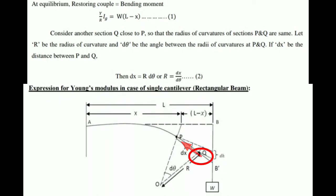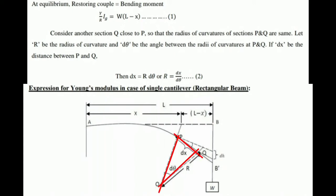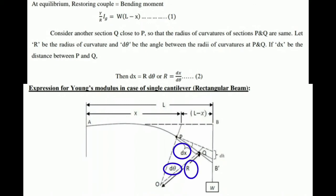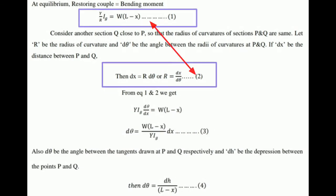In the same cantilever, consider another section Q close to P, so that the radius of curvature at sections P and Q are the same. Let R be the radius of curvature and dθ be the angle between the radii of curvature at P and Q. If dx is the distance between P and Q, then dx = R·dθ, or equivalently R = dx/dθ — this is Equation 2.